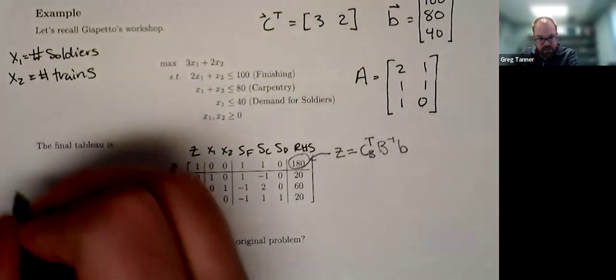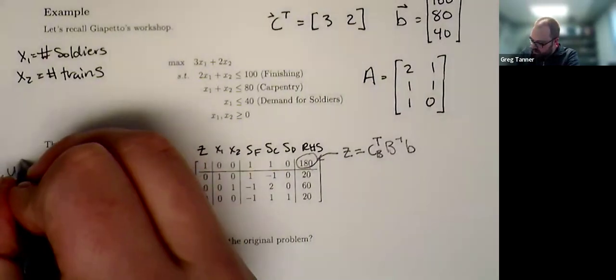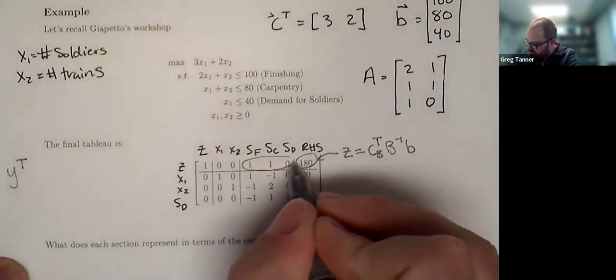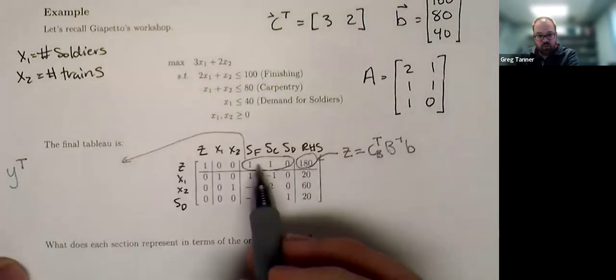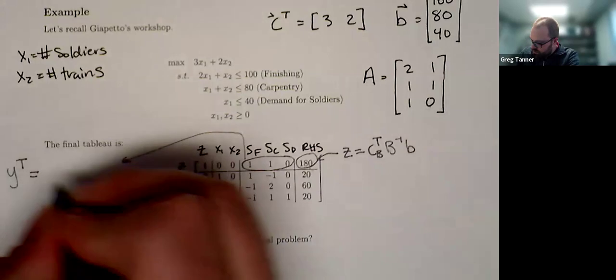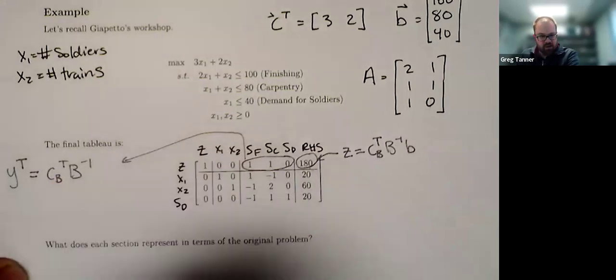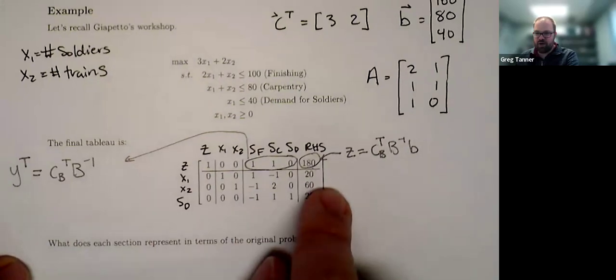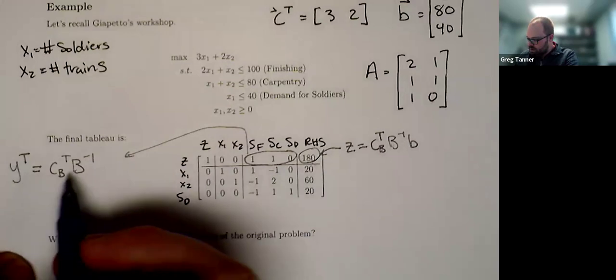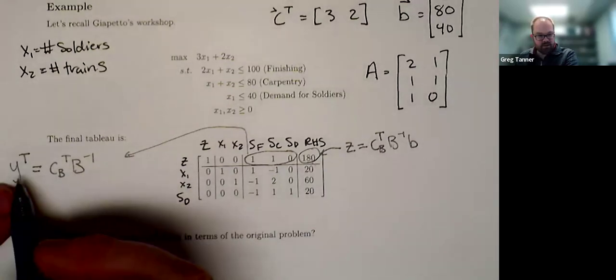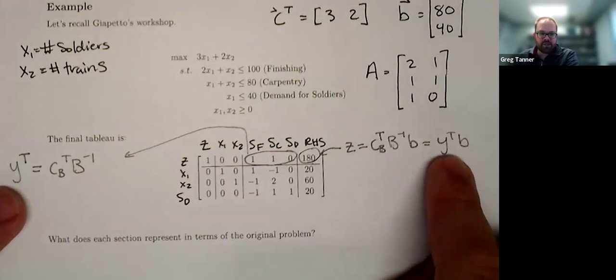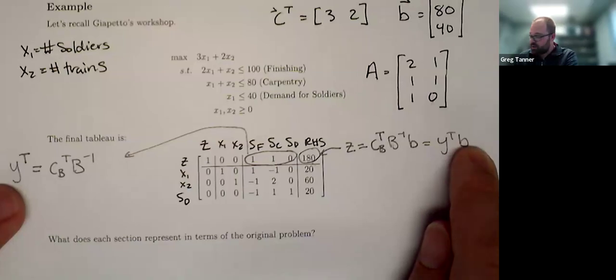We'll remember that we make a helpful replacement here in that our dual variables for this problem, which maybe I should circle those, those are right here of 1, 1, 0. Those are equal to CB transpose B inverse. All of these come from that fundamental insights of the simplex method video. And so recognizing that this is our dual variables or Y, we could then rewrite this as Y transpose B. That's how we get our interpretation of Y as the shadow prices. They're essentially the value attached to the amount of resources that we specify.